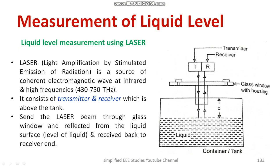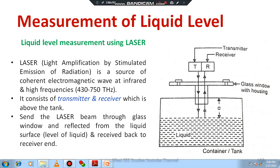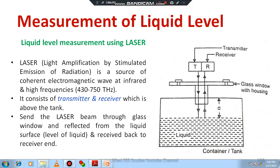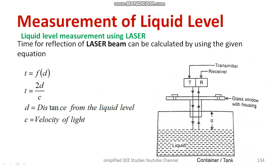Another method is measurement using laser. The full form of laser is Light Amplification by Stimulated Emission of Radiation. The frequency range is between 430 to 750 terahertz. There are transmitters and receivers. The laser beam is passed from the transmitter, detects the water level, and reflects back to the receiver. The time required for the laser beam to return is measured. The formula used is t = 2d/c, where c is the velocity of light, and this time is used to determine the water level.